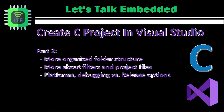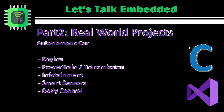In Part 2, we'll be touching a little more on how to organize the overall C source code with a better folder structure. We'll see more about project filters and project files, how they are affected by folder structure changes. We'll also cover deleting and adding platforms, and importantly, what is the debug versus release option.